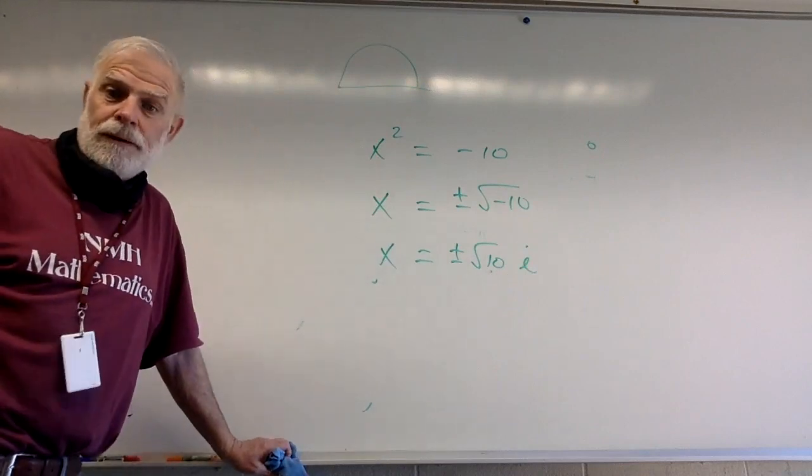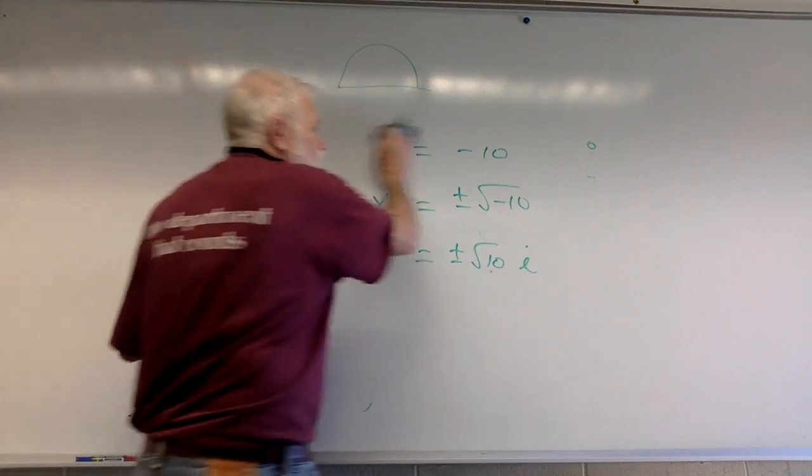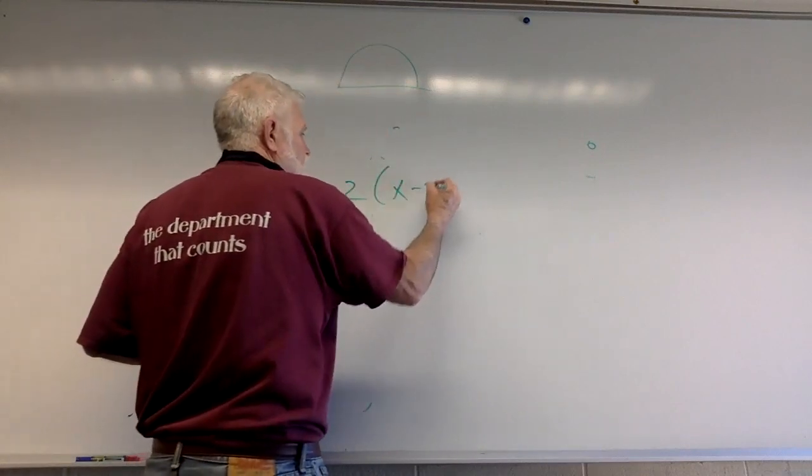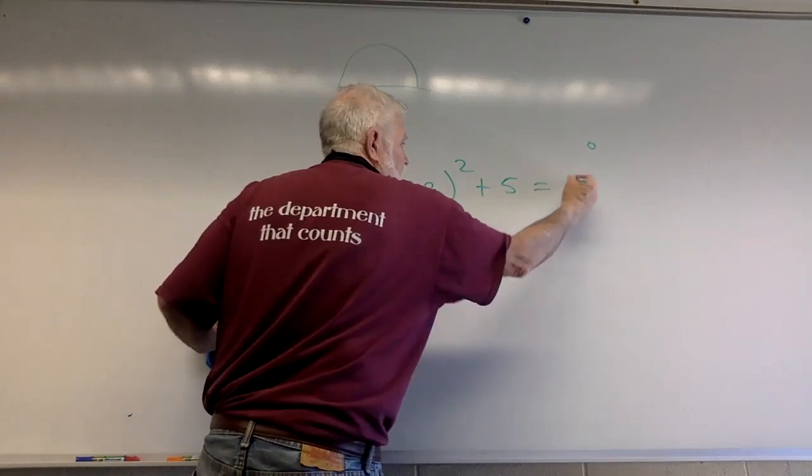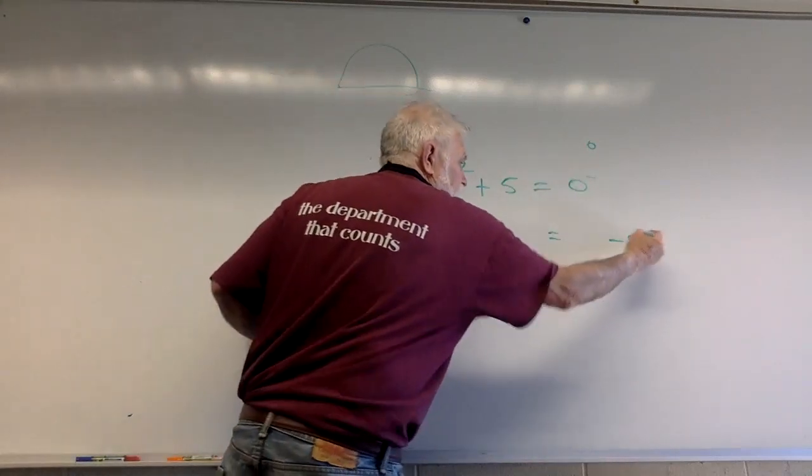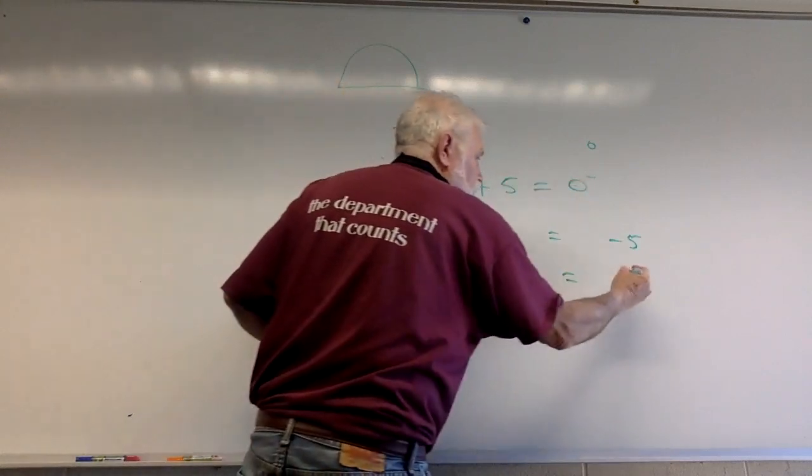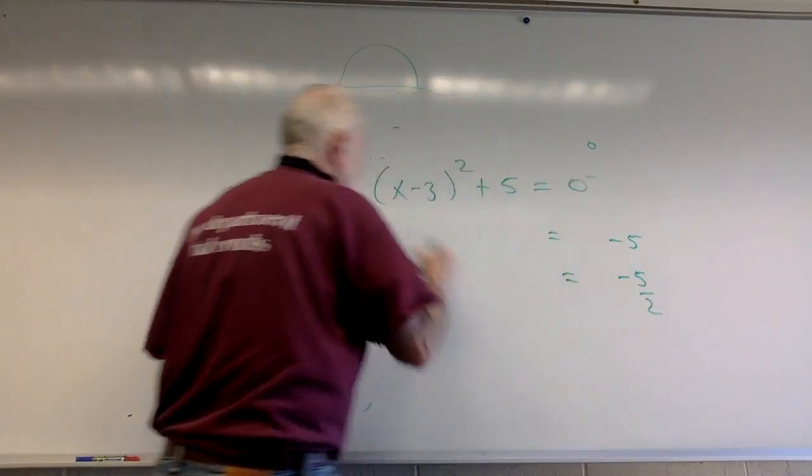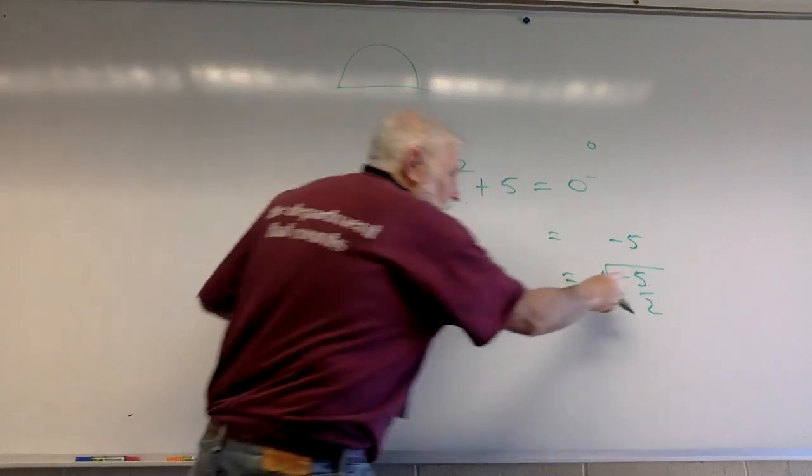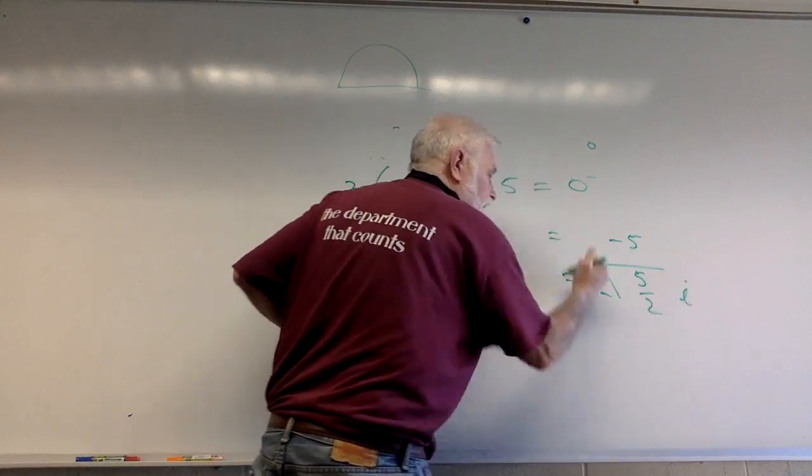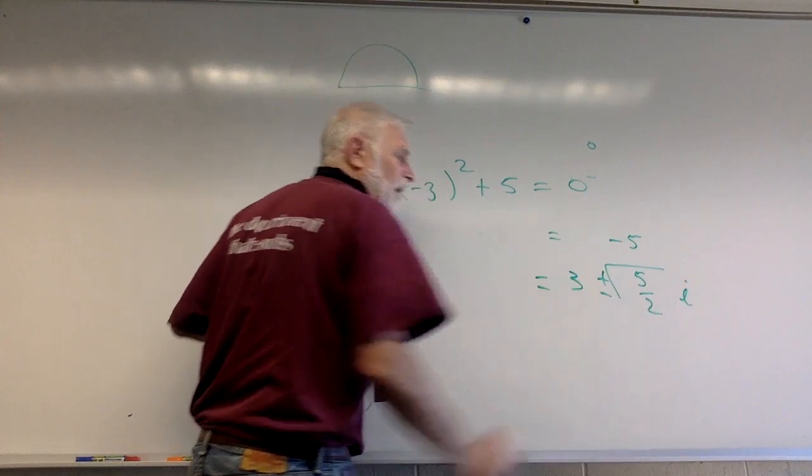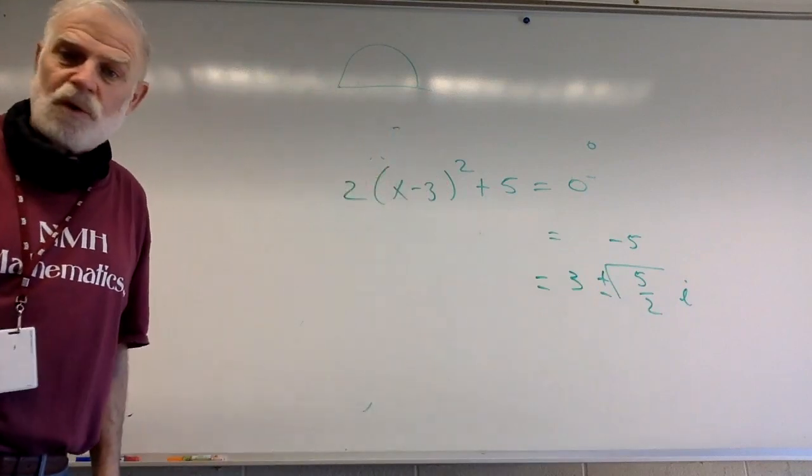That morphed us into this discussion: how do you solve 2(x-3)²+5=0? I hope you moved the 5 to this side, I hope you divided by 2, I hope you did the ±√, I hope you took the minus and called it i, and then I hope you put -3 on the other side as positive 3. That's just a solution to a quadratic.